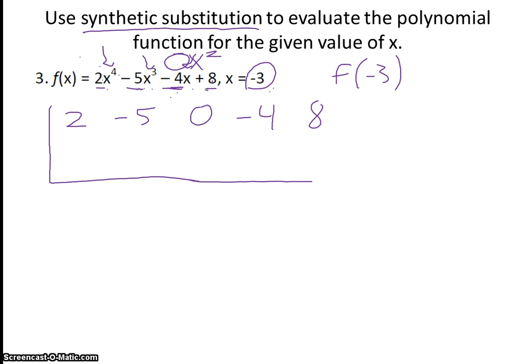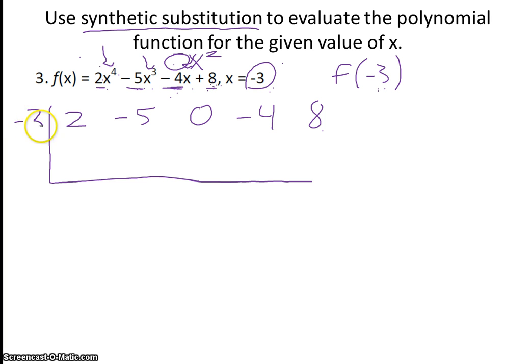If you're missing your constant term, don't forget to also put a 0 in at the end. So whenever you're missing a term in the middle or at the end, you need to put a 0 as a placeholder. Then the number that we want to evaluate our function at — so negative 3 — is the number that we put out to the side.